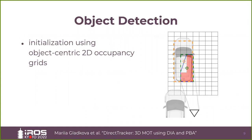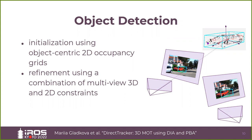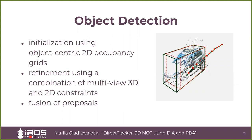For 3D object detection, we firstly project 3D points from bundle adjustment onto the ground plane and compute a 2D occupancy map. This allows us to regress an initial 2D object footprint, which we further lift to 3D space. Secondly, we refine the 3D bounding box by integrating multi-view 2D and 3D constraints. In particular, we enforce that the projection of the 3D bounding box is consistent with 2D detections and all points are inside the 3D bounding box. We optionally regularize the prediction according to the previous estimate as well. As we estimate the transformation from camera to the canonical local coordinate frame for every keyframe, we use the estimates to achieve a globally and locally smooth trajectory.